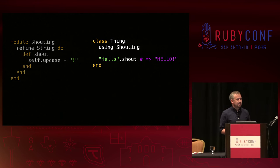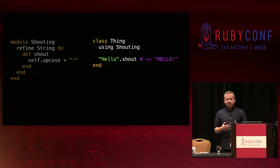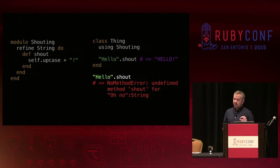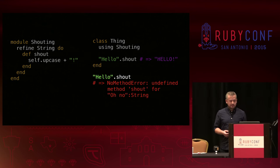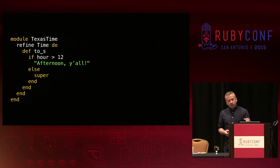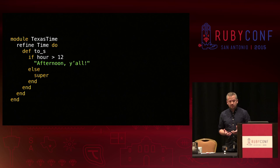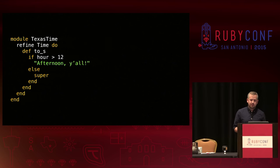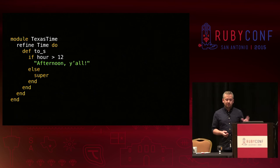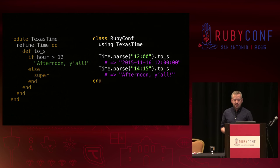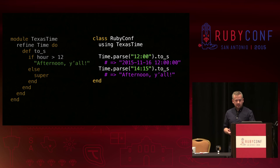Another way of saying this is that the refinement has been activated within that scope. However, any strings outside the scope are left unaffected. Refinements can also change methods that already exist. When the refinement is active, it is used instead of the existing method, although the original is still available via the super keyword, which can be very useful. And anywhere the refinement isn't active, the original method gets called exactly as before.